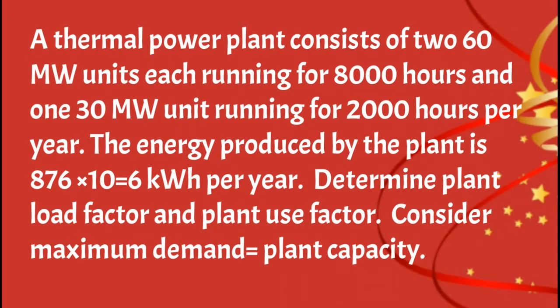A thermal power plant consists of two 60 MW units each running for 8000 hours, and one 30 MW unit running for 2000 hours per year. Energy produced by the plant is 876 × 10^6 kWh per year. Determine plant load factor and plant use factor. Consider maximum demand is equal to plant capacity. So, this was the given question.